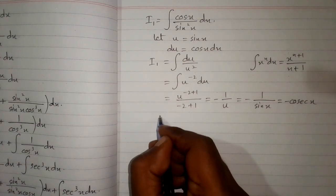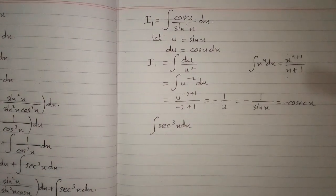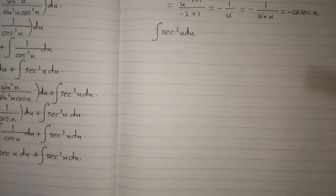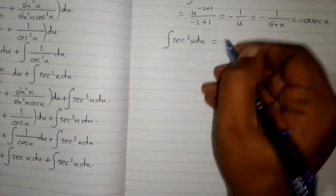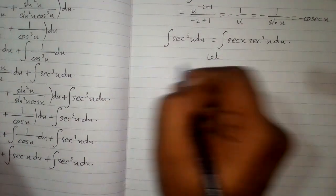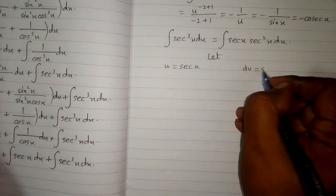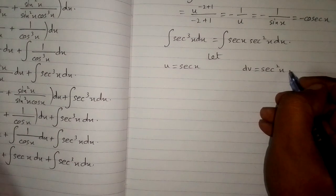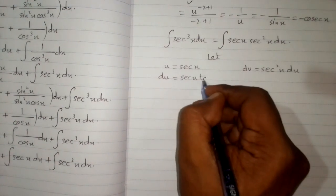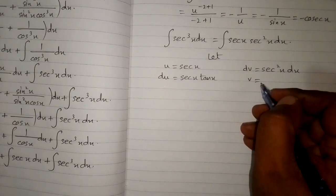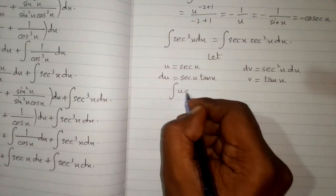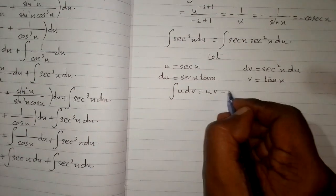Now we will integrate sec cubed x dx. This can be written as sec x multiplied by sec squared x dx. We will integrate this by integration by parts. The differential du equals the derivative of sec x, which is sec x tan x. Integrating both sides, v equals the integral of dv, and the integral of sec squared x is tan x. The formula of integration by parts is the integral of u dv equals u times v minus the integral of v du.